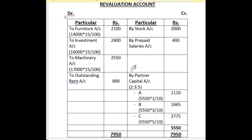Prepaid salary is an asset, so it increases and is written on the credit side of revaluation account. As we see, 'by partner's capital account' is written on the credit side of revaluation account, which means it is a revaluation loss, because the debit side of the revaluation account is more than the credit side. The balance is Rs. 5,550.